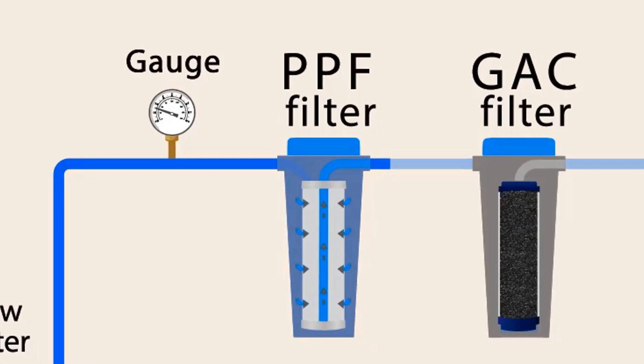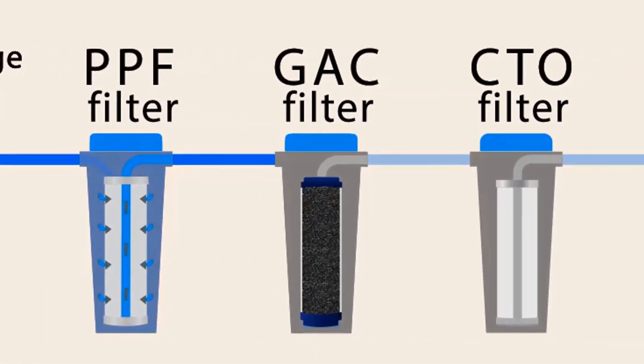Then this water goes to the GAC filter. GAC is abbreviation of granular activated carbon. Granular activated carbon is made from raw organic materials, such as coconut shells or coal, that are high in carbon. This filter removes certain chemicals that are dissolved in water, like chlorine and hydrogen sulfide.